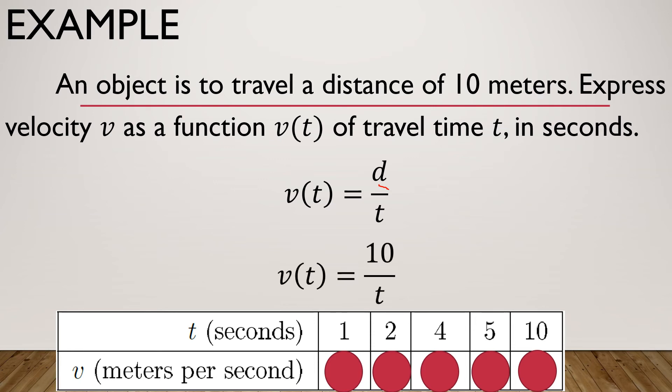So the resulting rational or resulting function will be v(t) = 10/t. Now, we are going to replace t by seconds or the number of seconds because the velocity must be meter per second. So if it is 1, we have 10 because 10 divided by 1 is 10. So 10 meters per second. How about if it is 2 or the number of seconds is 2? So that will be 5, 10 divided by 2.